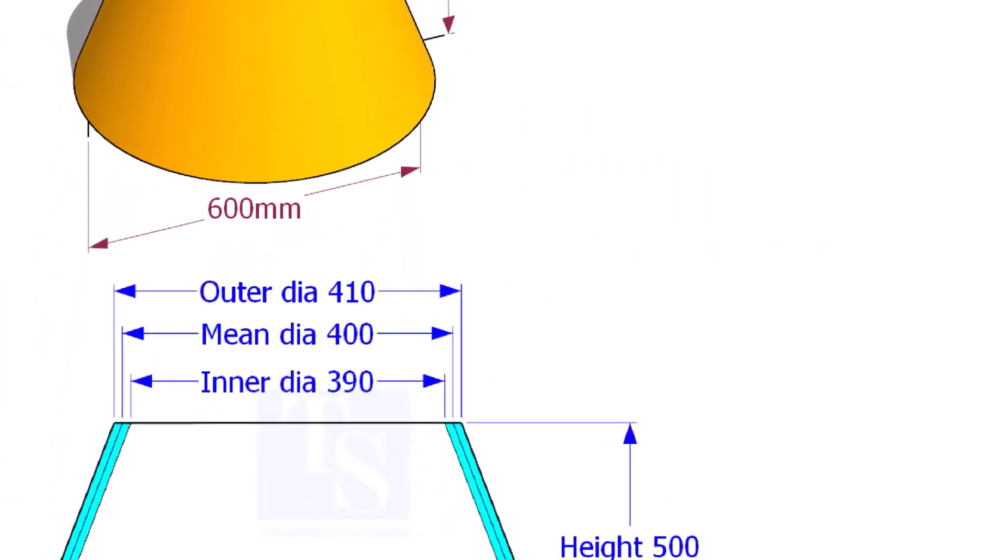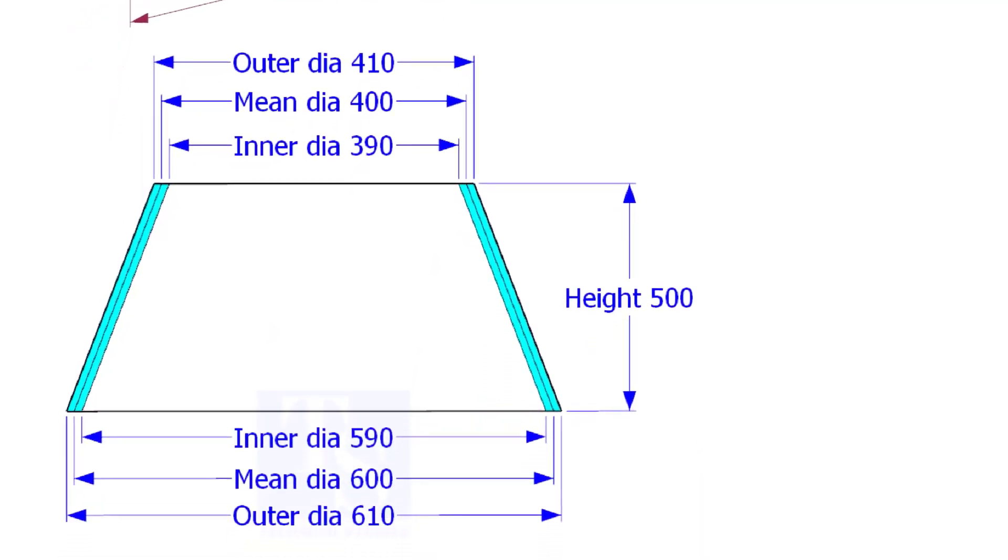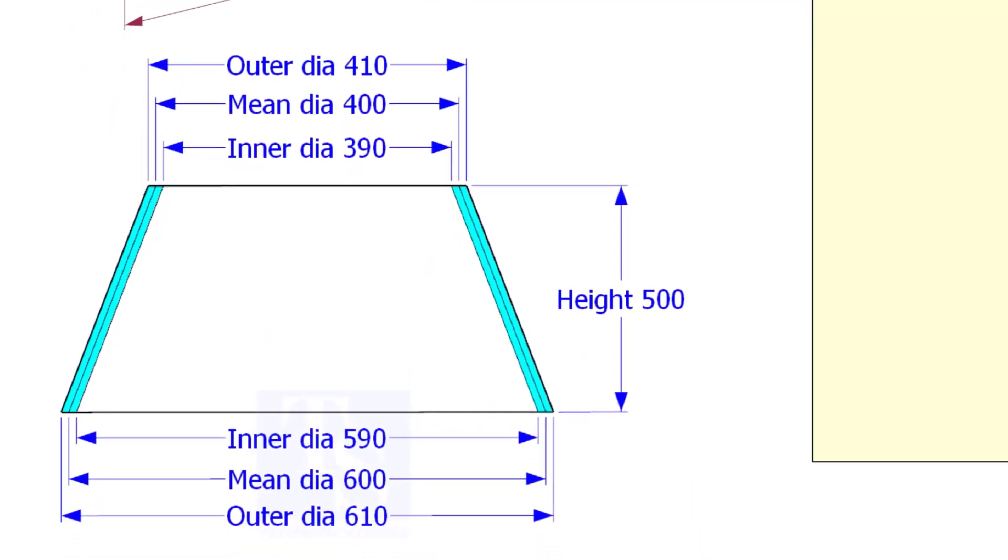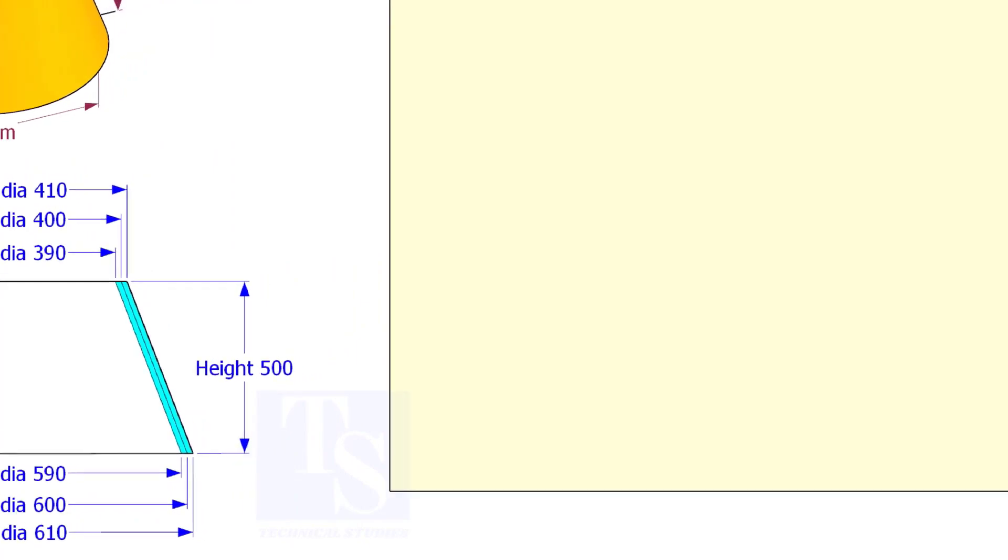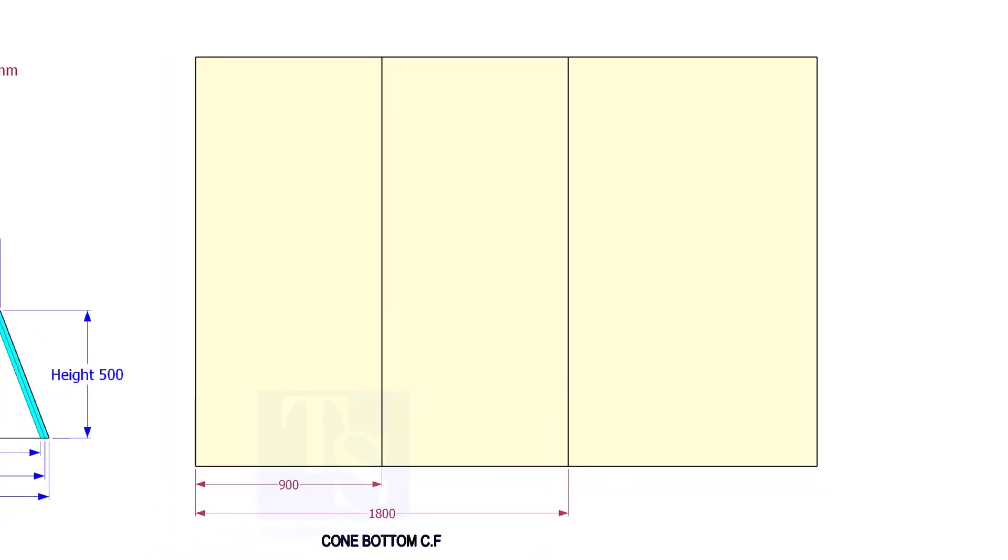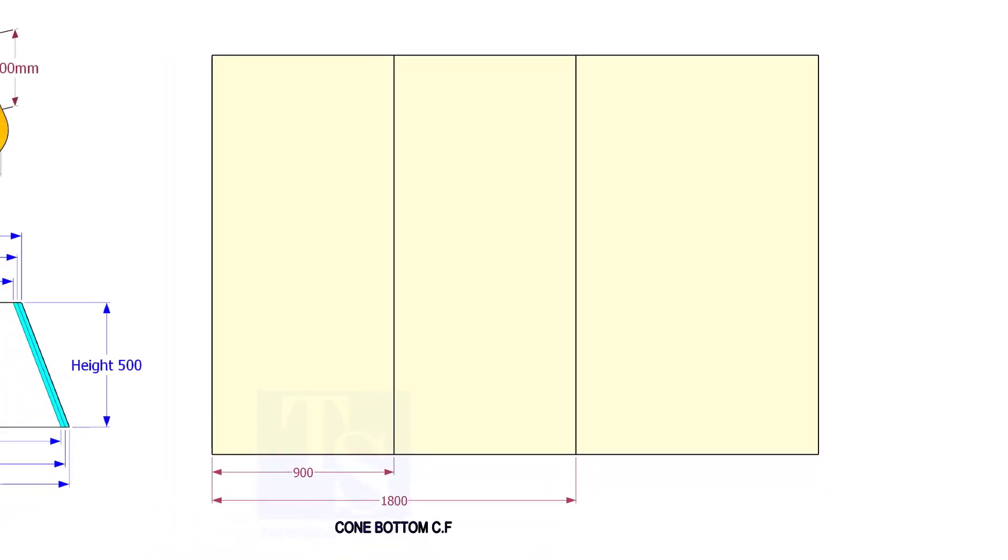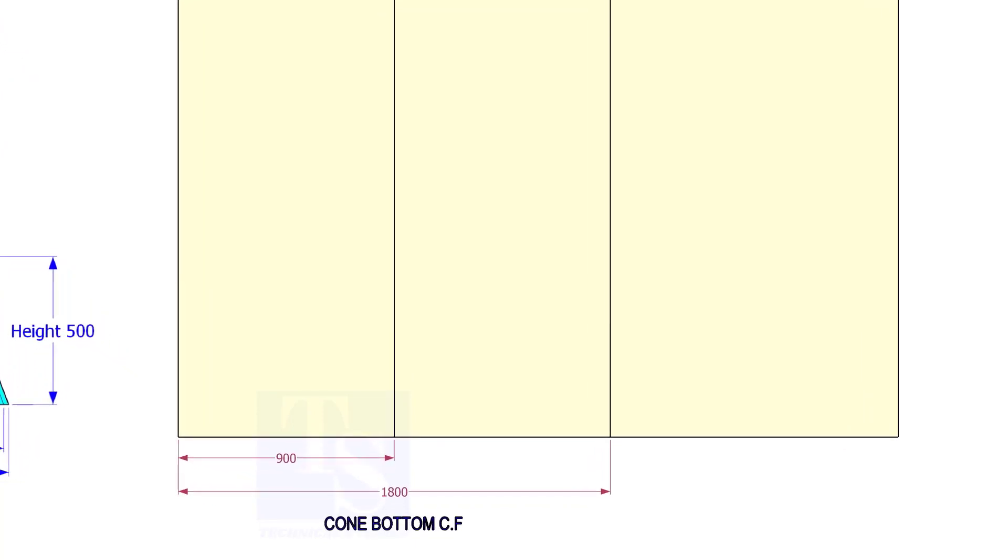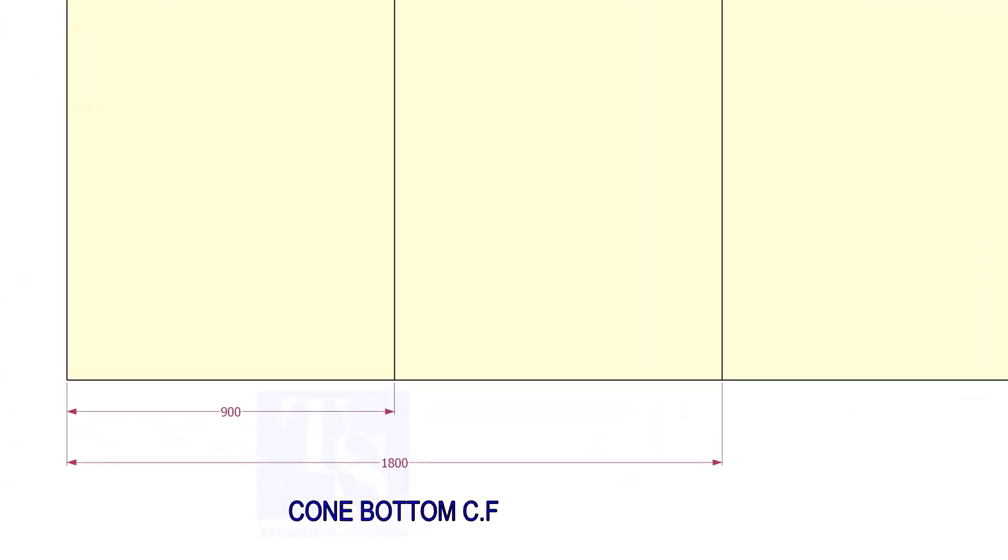Mark a line roughly half the circumference of the bottom of the cone from the edge of a plate. This marking is for reference only.